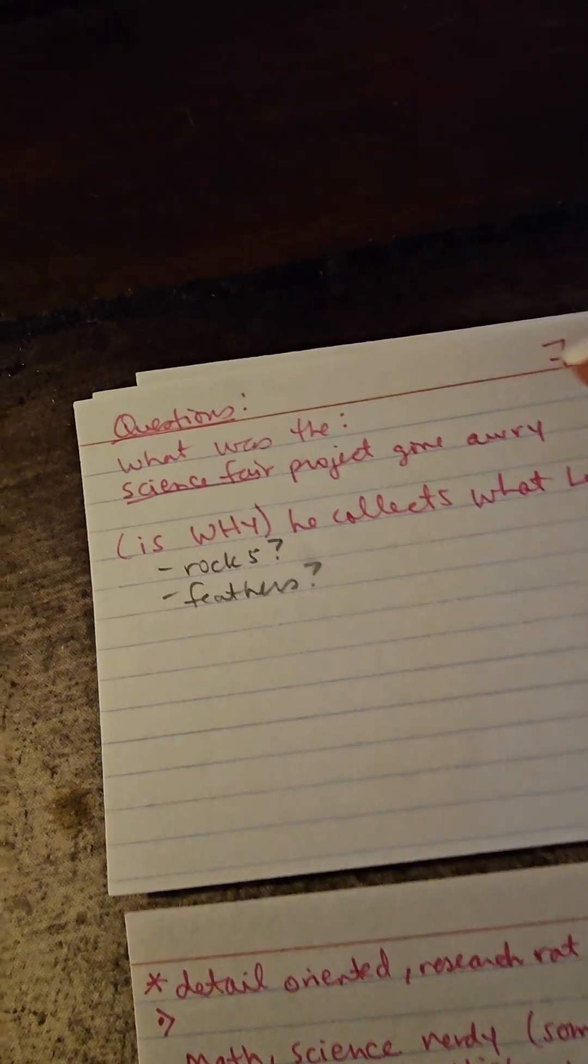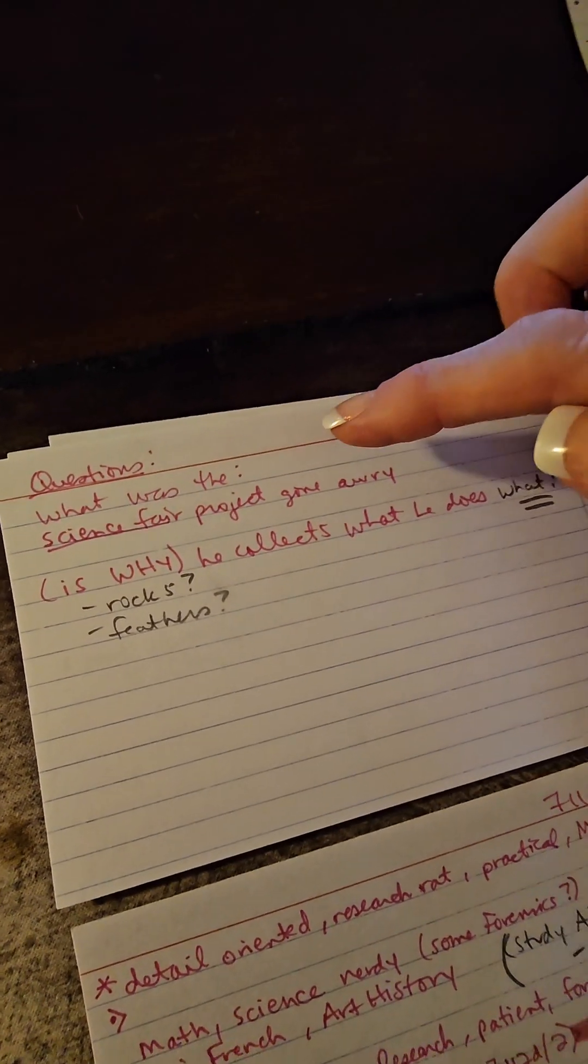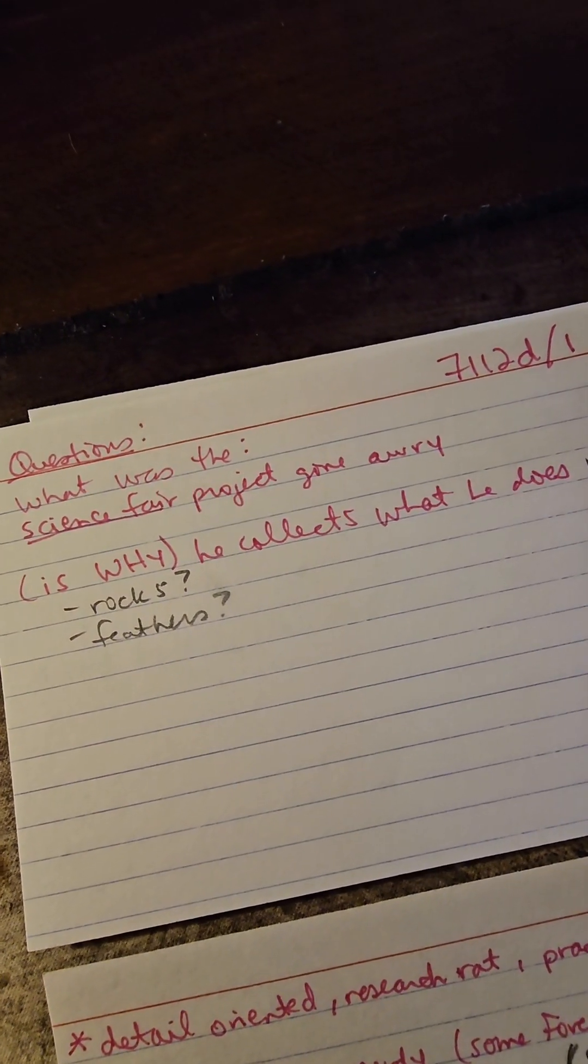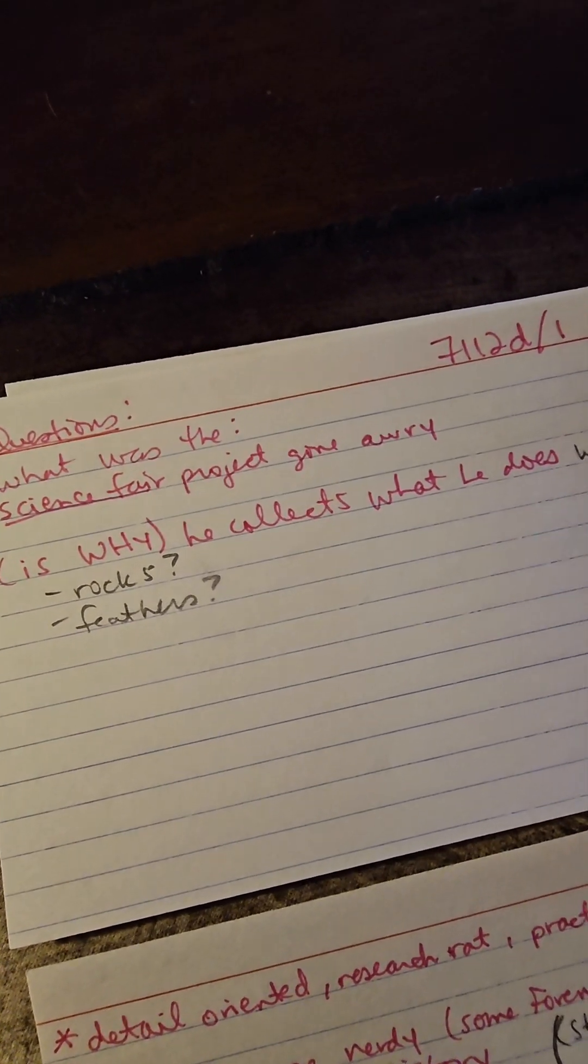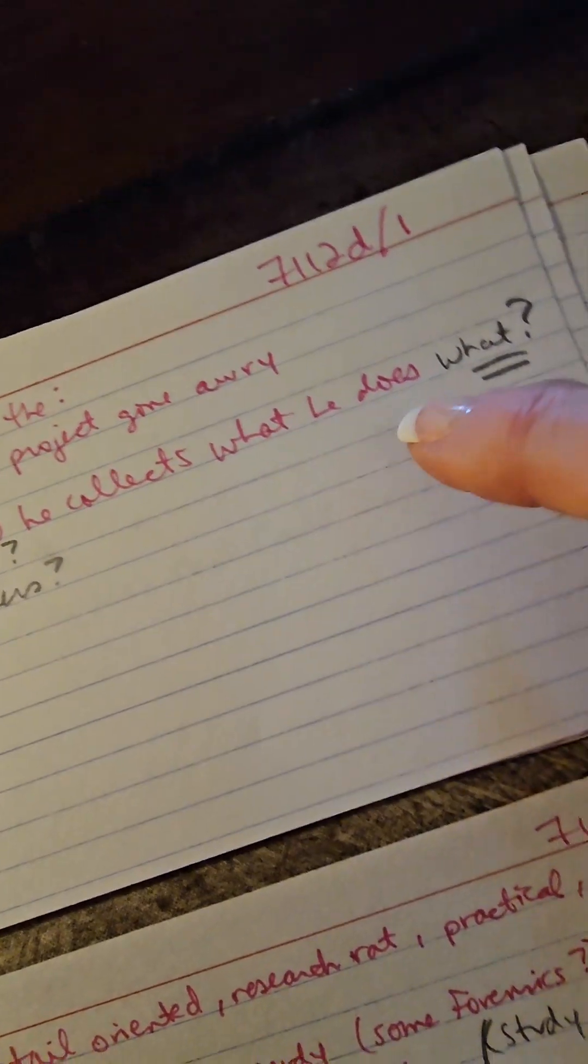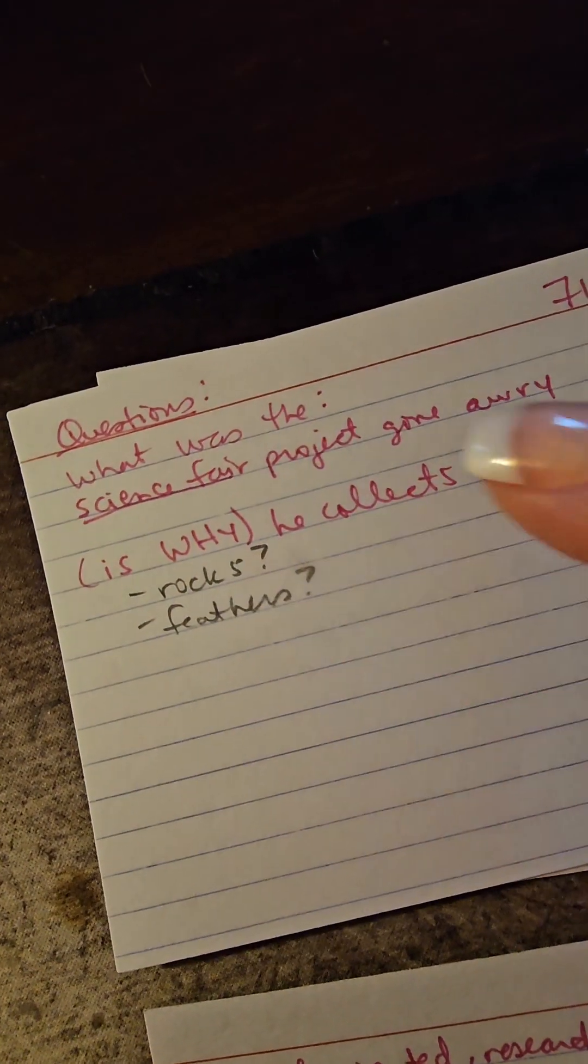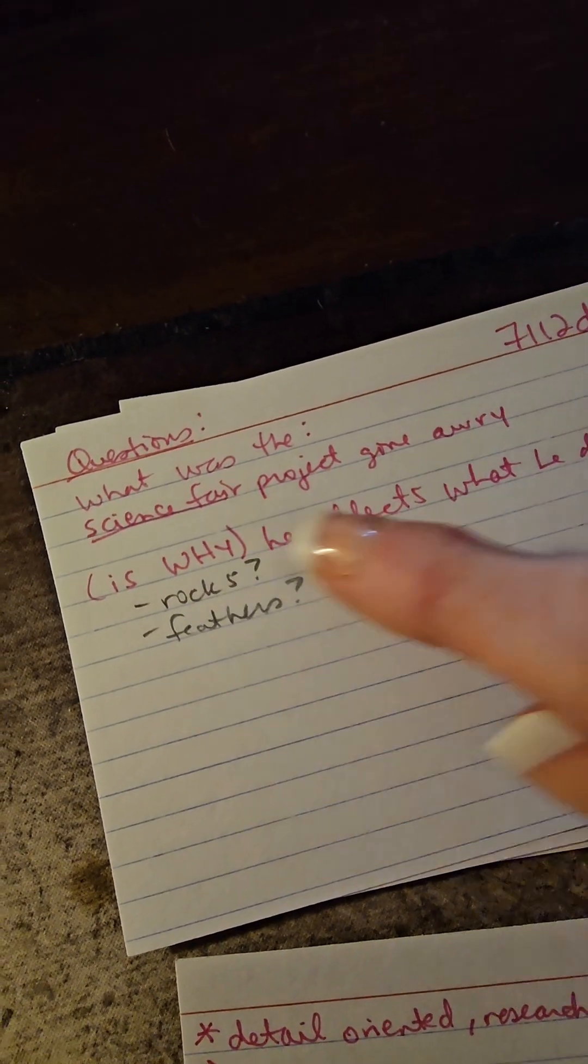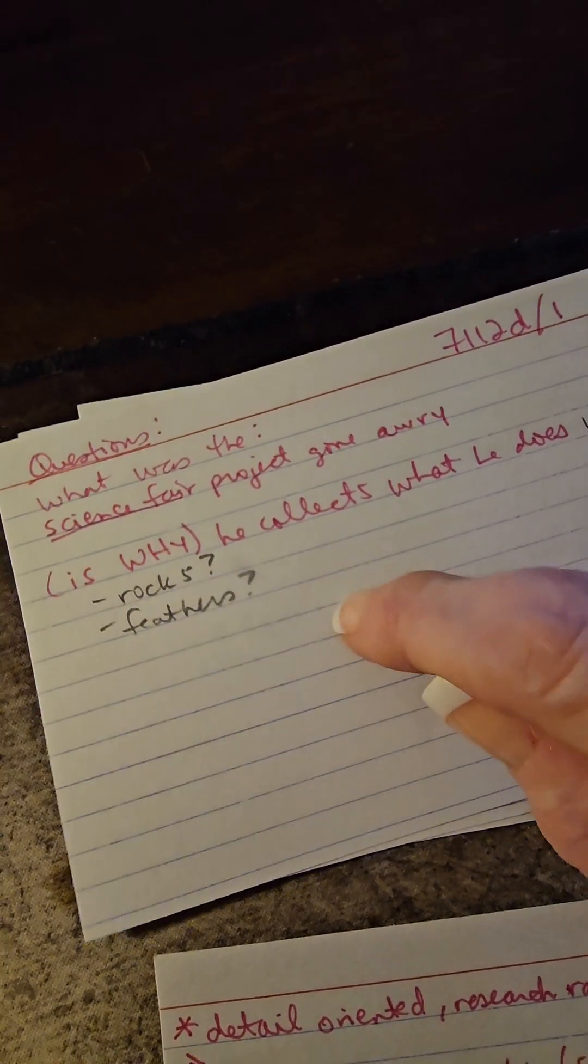Okay, so questions I'm thinking about when I made that note: what was the science fair project that went awry? So there's going to be something in Chad's scholastic past that informs who he is as a character. Perhaps that project gone awry is why he collects the items that he does. What does Chad collect? Perhaps it's rocks, perhaps it's feathers. Again, pencil notes to myself because I haven't figured that out yet. I need to do some work in the story to understand what does he need to collect as a character that's relevant somewhere in the story.